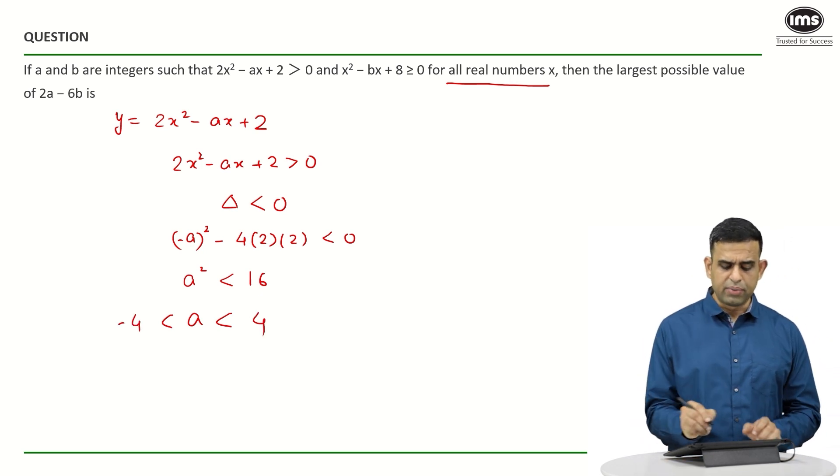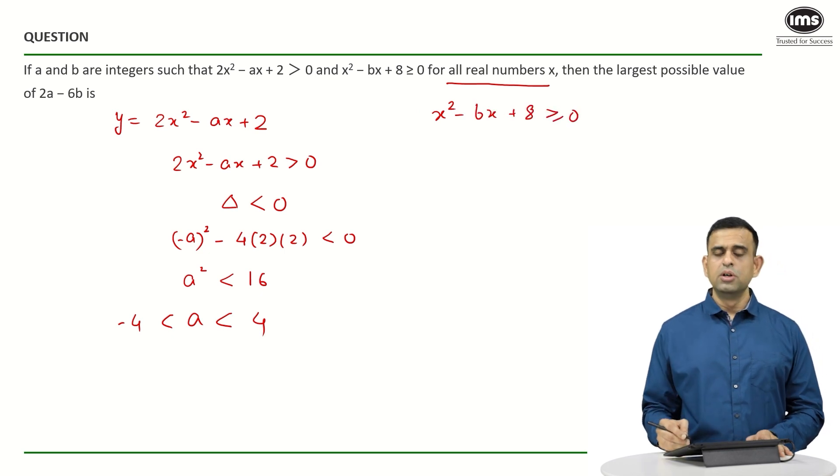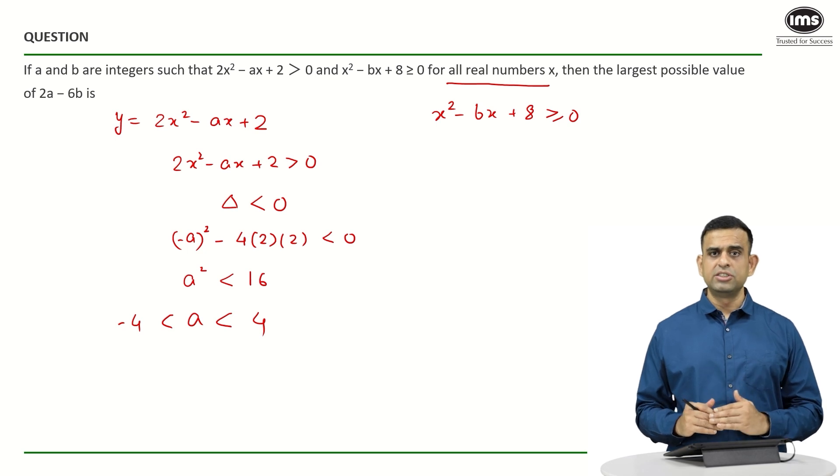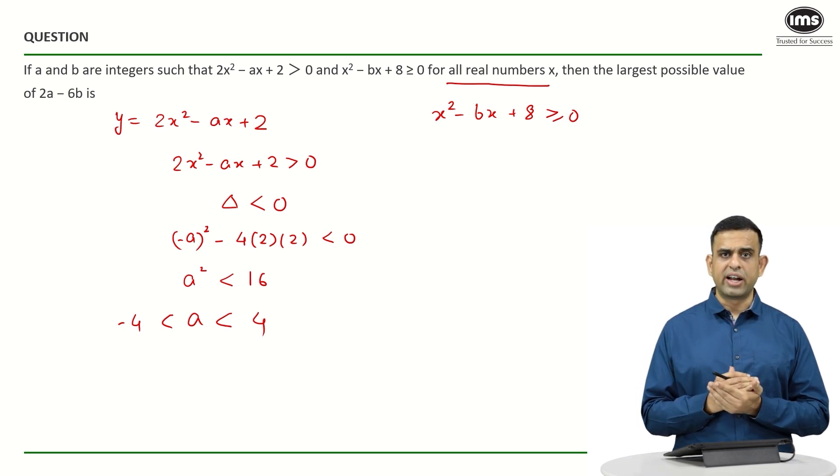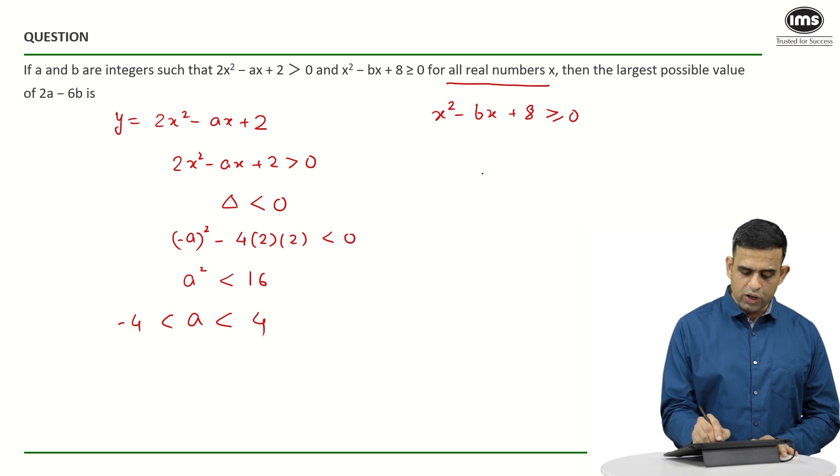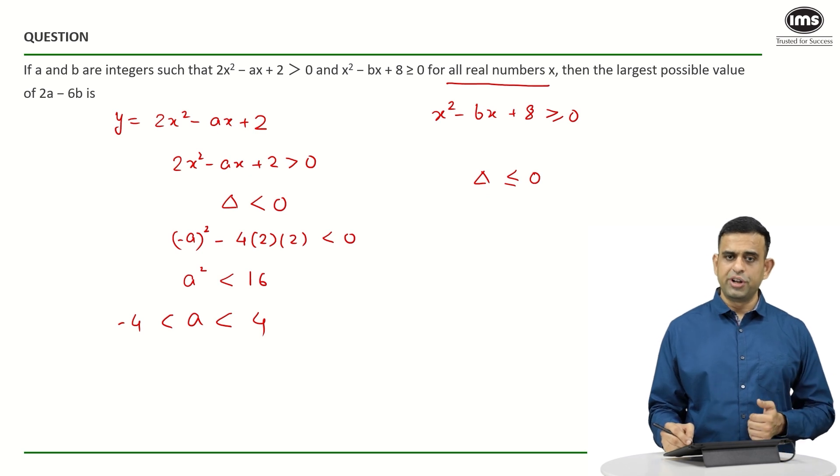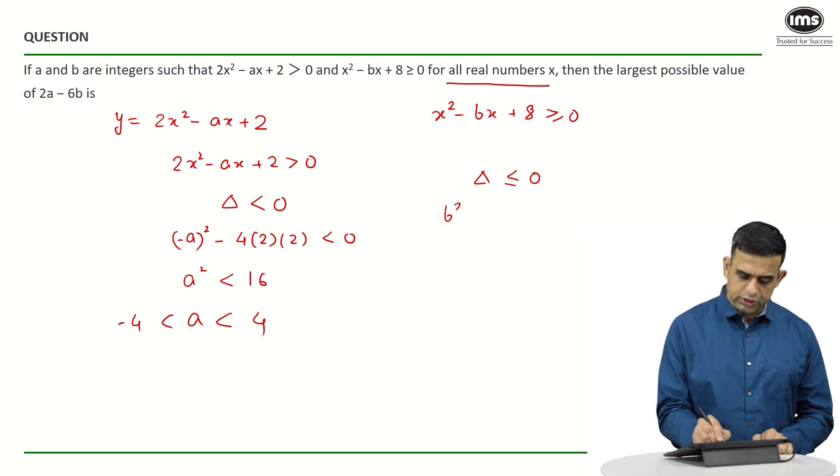Similarly, if you look at the other part, I wanted the term x² - bx + 8 to be more than equals to 0. This time my graph basically can touch the x axis or it has to be above the x axis and for that to be true as I told you the condition should be now delta must be less than equals to 0. Now delta again as I told you is b² - 4ac will become b² - 4 into 1 into 8 less than equals to 0.